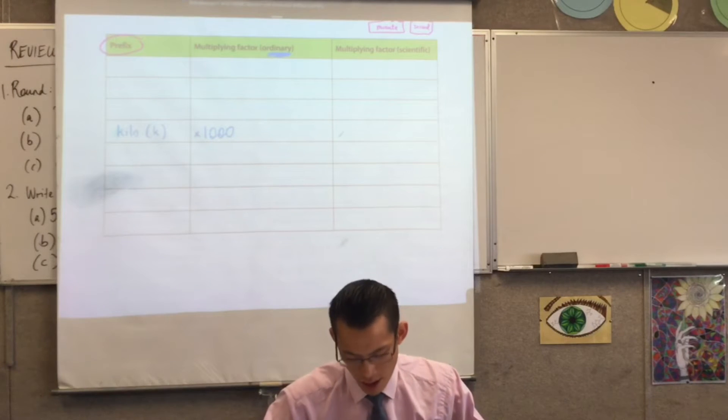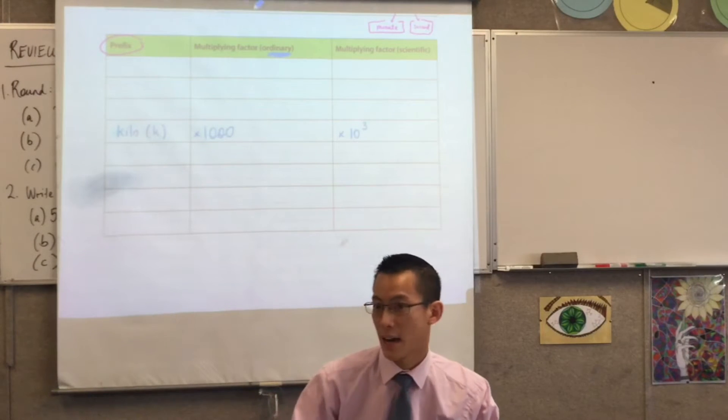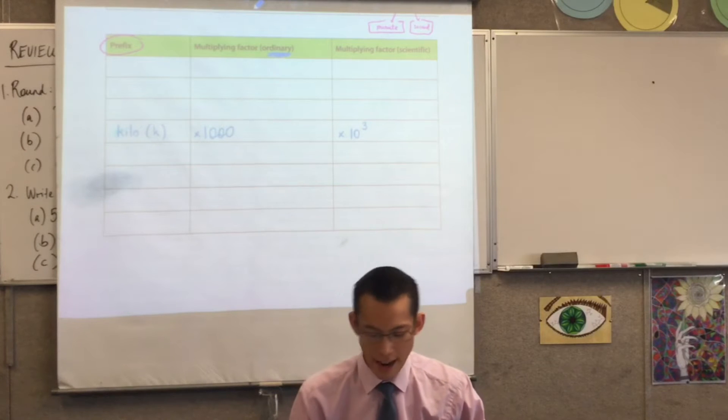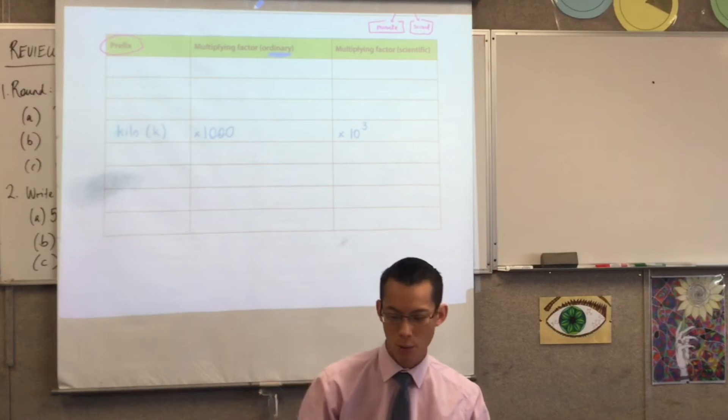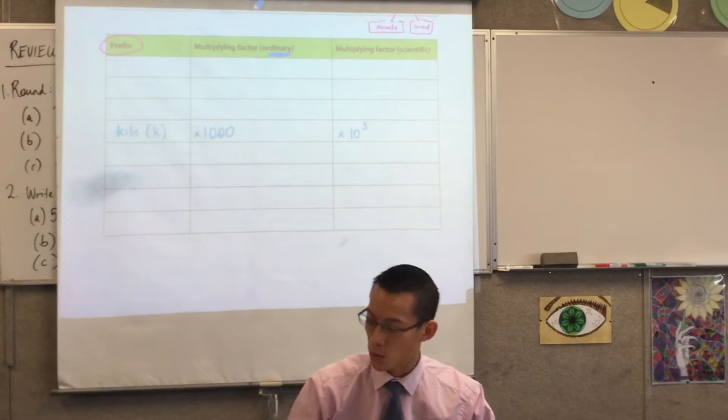And I guess you'd have some other number like 5 or 2.3 or whatever depending on how many kilos you've got. Remember, these are prefixes.